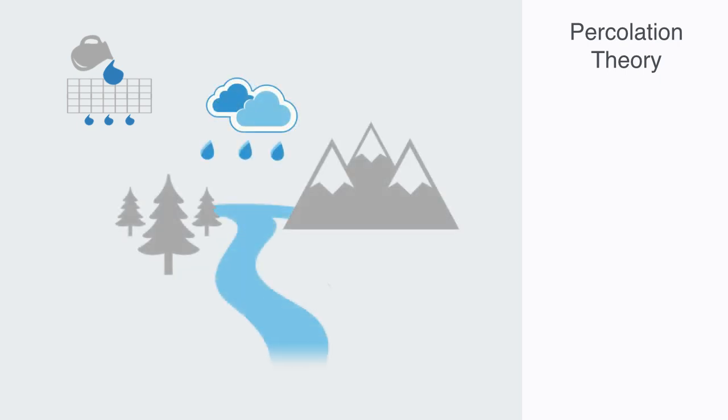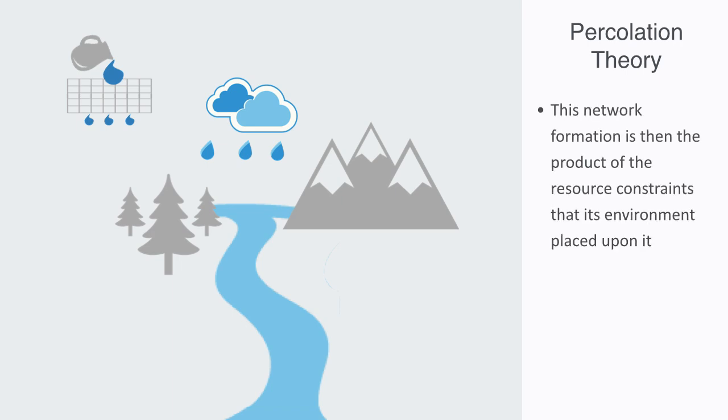One way of thinking about how real-world networks form is through the lens of percolation theory. Percolation theory looks at how something filters or percolates through something else, like liquid filtering through some mesh structure in a material. We might think about water running down the side of a hill. As it does, the water will find the path of least resistance, creating channels and furrows in the side of the hill. We can then see how this network formation is the product of the resource constraints that its environment placed upon it. But the constraints are unevenly distributed, and the network's topology is then reflecting this, as the water follows the paths of least resistance to avoid the toughest material.